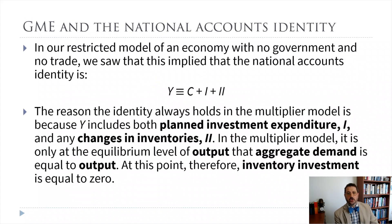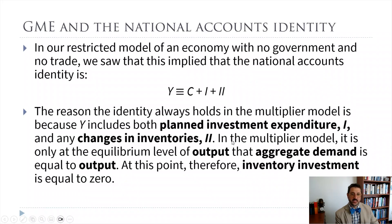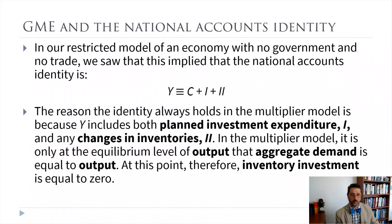In our model without any government and no trade, GDP equals consumer spending plus investment spending plus inventory investment (changes in inventories). In our equilibrium, aggregate demand — which is C plus I — equals output, so our inventory change is zero. That's really what we mean by equilibrium: we're buying the same amount that we're producing, so inventories are staying the same.